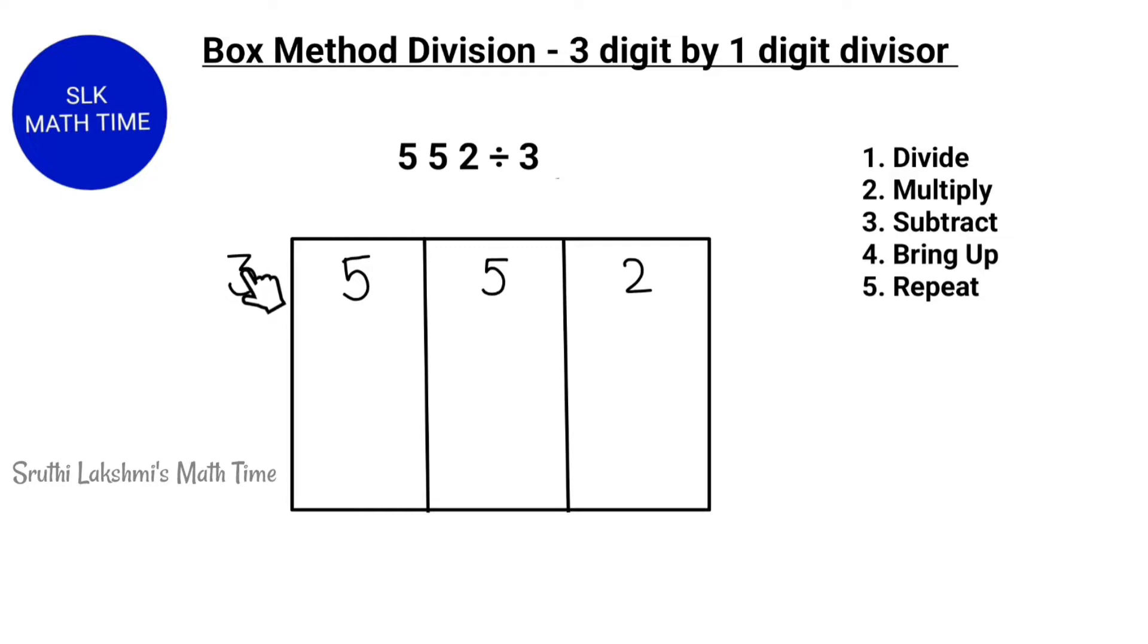So, let's start. Now, we see how many 3's can fit in 5. 1 three can fit in 5, so we write 1 over here. Now we multiply 3 times 1, which is 3. Next, we subtract 5 and 3. 5 minus 3 is 2. Now, we bring up this 2 over here.